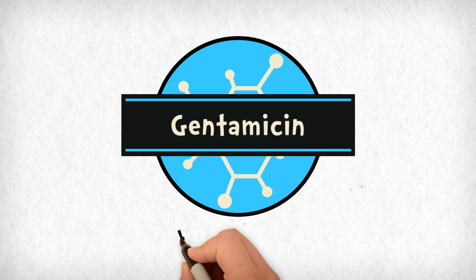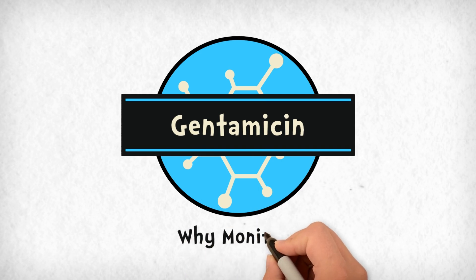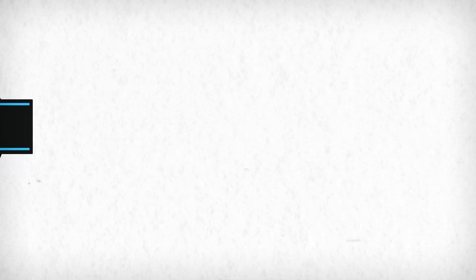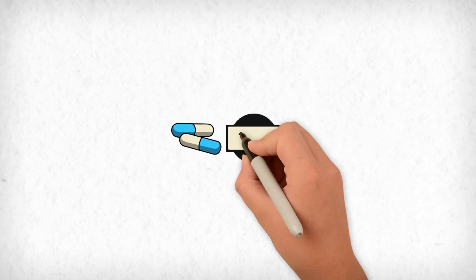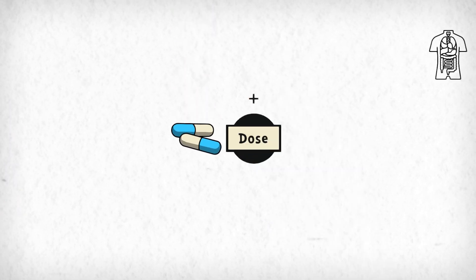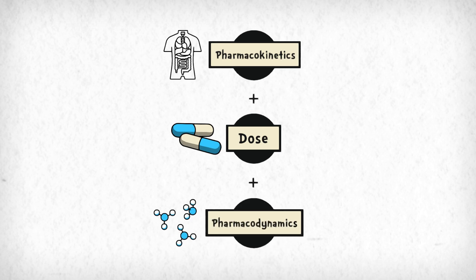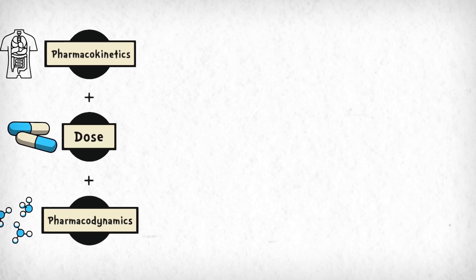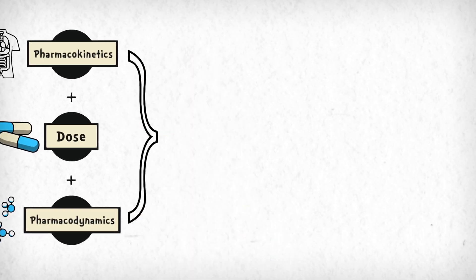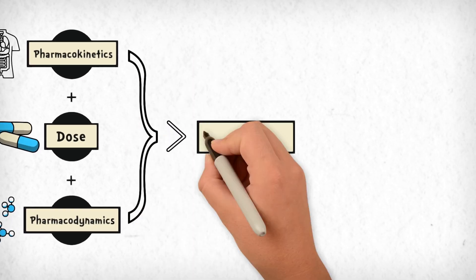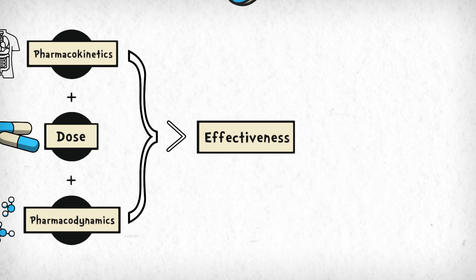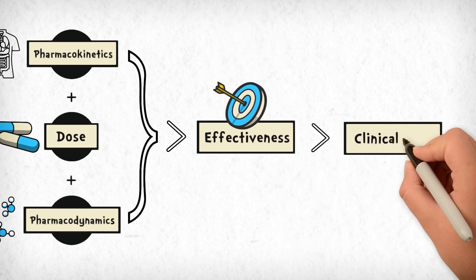Gentamicin serum levels are monitored for a few reasons. I'll first discuss the big picture and then break it down into each component. The dose of gentamicin combined with individual pharmacokinetic and pharmacodynamic factors determines the bactericidal, or bacterial killing, effectiveness of gentamicin, which then determines the clinical outcome.